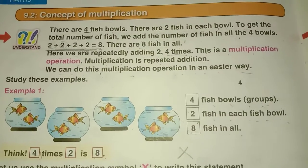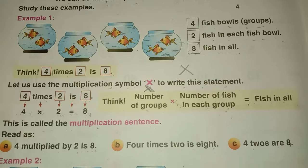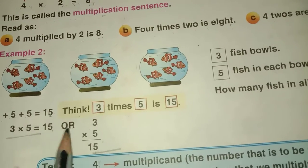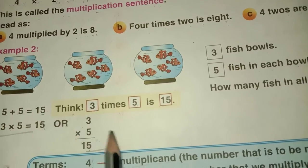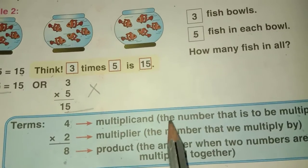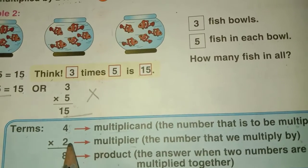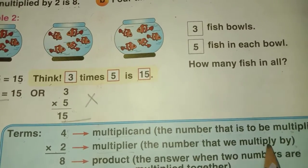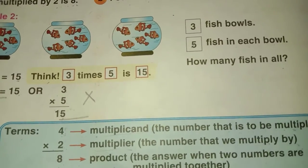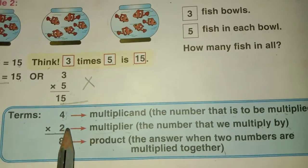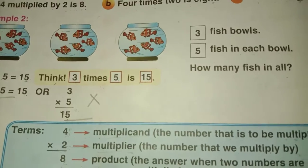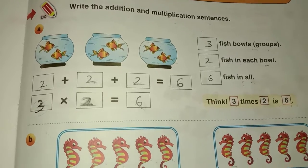We have already studied how to write the multiplication sentence. For example: 3 into 5 is equal to 15. The first number is called the multiplicand — the number that is to be multiplied. The second number is the multiplier — the number that we multiply by. The answer we get is the product — the answer when two numbers are multiplied together.